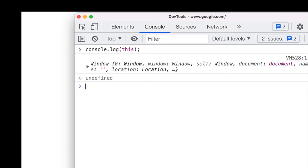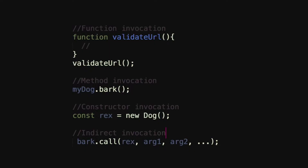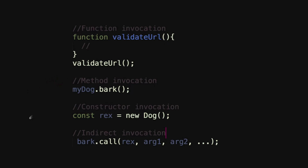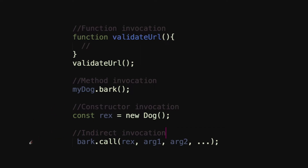Now let's take a look at what the keyword this refers to when we reference it within a function. The easiest way to do that is by looking at how the function is being invoked. In JavaScript, there are four different ways we can invoke a function: regular function invocation — a function that doesn't belong on an object; method invocation — a method that belongs to an object; constructor invocation where we can create new objects; and indirect invocation, which is using .bind, .apply, and .call to explicitly bind functions to objects.